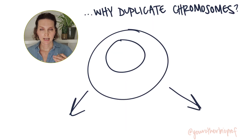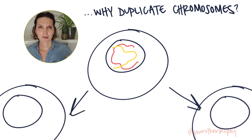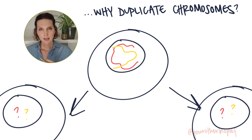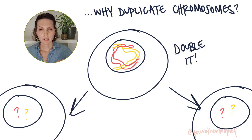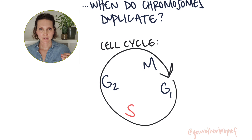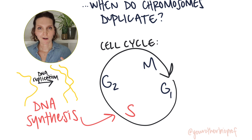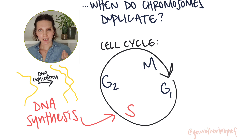Before a cell divides, it has to make sure it has enough genetic content for that one cell to produce two cells that each have the appropriate amount of DNA. So before mitosis and before meiosis one, we're going to have to make copies of all of the DNA in that cell's nucleus. This happens during the S phase — the synthesis phase — where the cell uses DNA replication to copy all of the chromosomes, generating duplicated chromosomes.